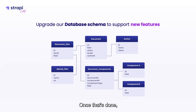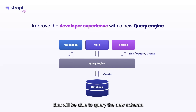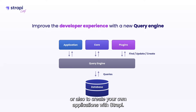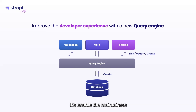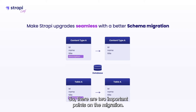Once that's done, we are going to expose a new query engine that will be able to consume the new schema format, allowing you to create plugins or your own applications with Strapi. It has three really important goals: enabling maintainers to create new features and enabling you to create great stuff as well. The third point on the DB layer is the way we migrate schemas.